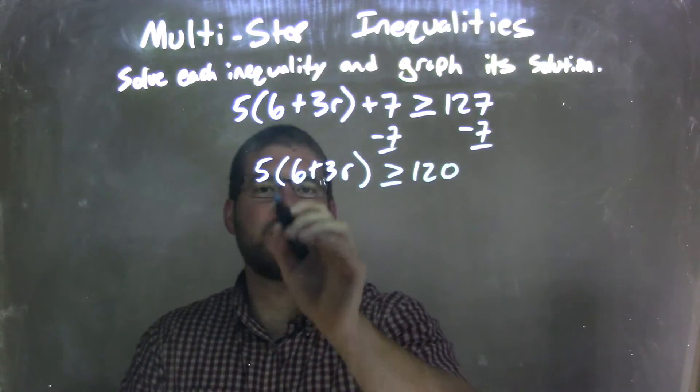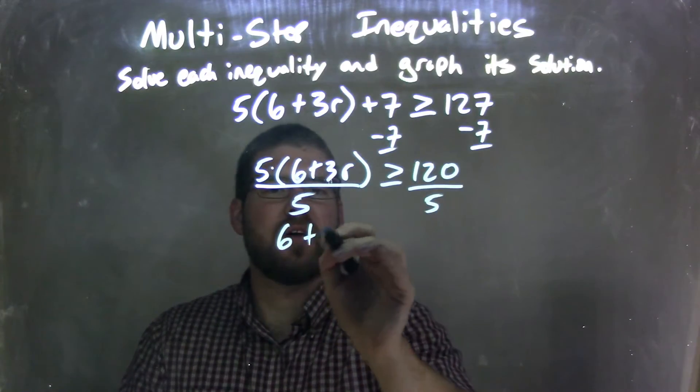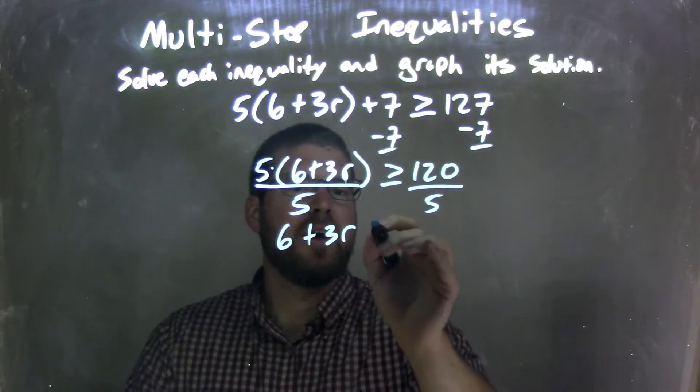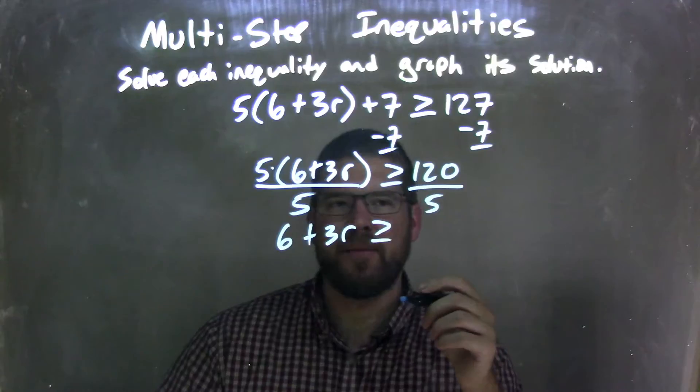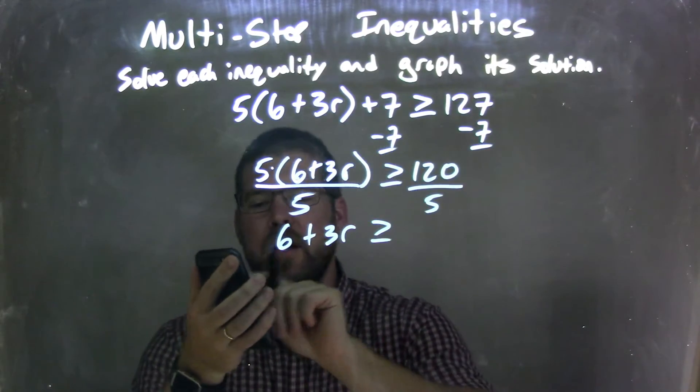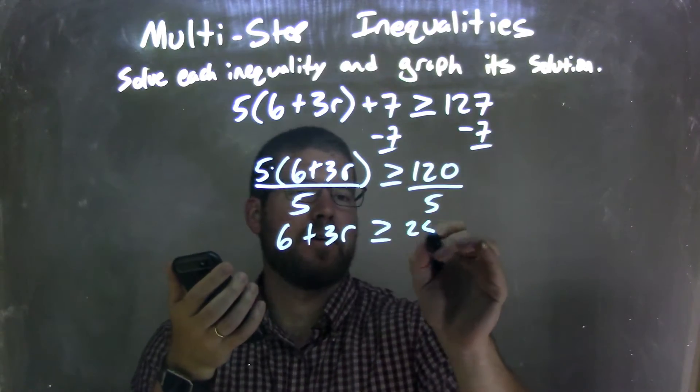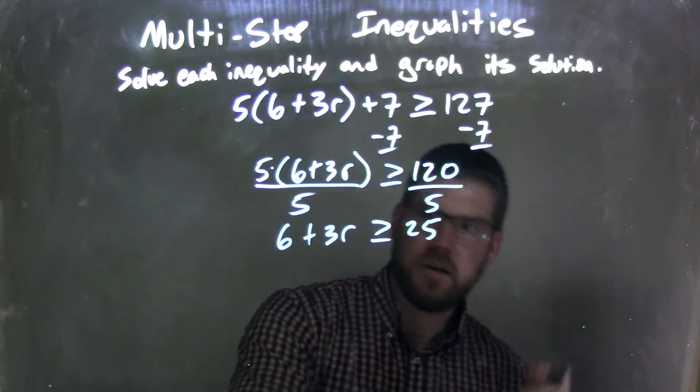Now I have the 5 multiplied out the front, so I'm going to divide by 5—opposite multiplication is division. And we have 6 plus 3R on the left is greater than or equal to 120 divided by 5. I believe that's 24, but let's see. 120 divided by 5, 24 is correct. That's why I have a college degree.